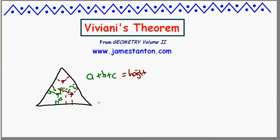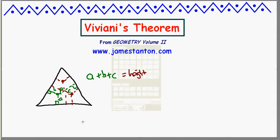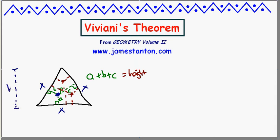Let me briefly prove why that's true, and then we'll talk about some fun generalizations. Why is this possibly true? Well, let's take a point P and use it to calculate the area of the triangle. Let's assume my equilateral triangle has side length X, and let's call the height of the triangle H. Of course I could work out what H is in terms of X, but let's just leave it like that for the moment.